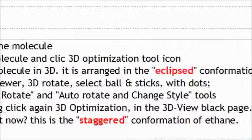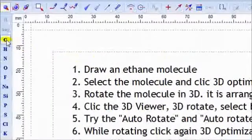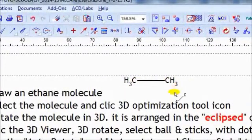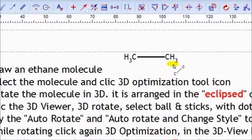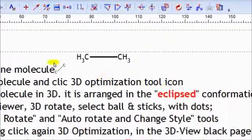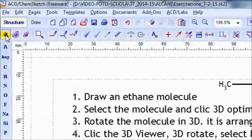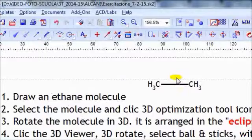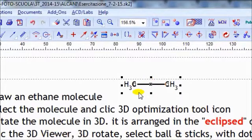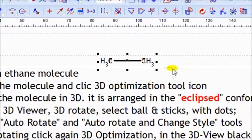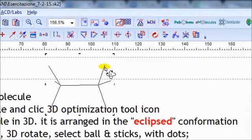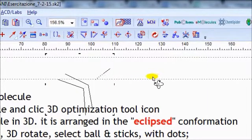Let's draw an ethane molecule by clicking two times carbon and carbon, so we get an ethane molecule. Now select the molecule and click 3D optimization tool icon. I take the selection tool, I click near the molecule and I completely select it. Now I search the 3D optimization tool, that is this one, and the molecule is selected and optimized in 3D.